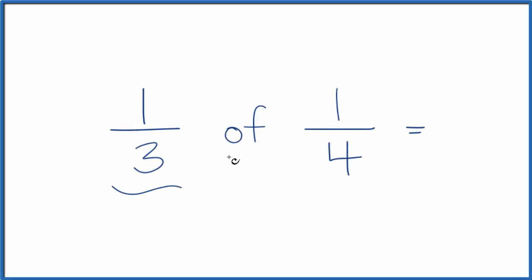Here's how you find one-third of one-fourth. We're going to take the 'of' and replace that with a multiplication symbol. So one-third of one-fourth is really just one-third times one-fourth.